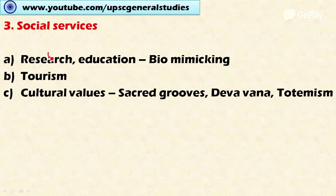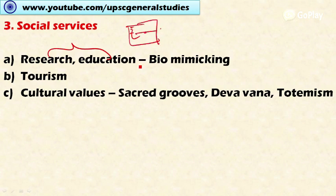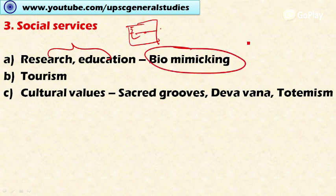Next are social services. In the area of research and education, we can study the ecosystem and understand our origin and survival capabilities. A new science called biomimicking involves studying natural systems — for example, studying how insects utilize thermodynamics for flying — and imitating those processes for designing aircraft. Biomimicking means mimicking biological processes to design new products.